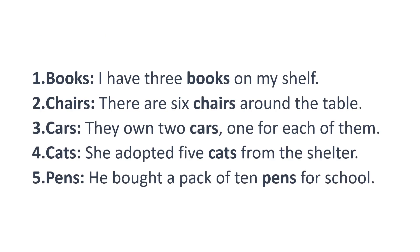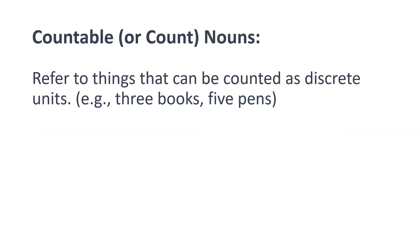Let's look at other nouns in sentences. 'I have three books on my shelf.' 'There are six chairs around the table.' 'They own two cars, one for each of them.' 'She adopted five cats from the shelter.' 'He bought a pack of ten pens for school.' Notice what is common among these nouns — we can count all of them, such as three books, five pens. These types, which can be counted, are called countable or count nouns.